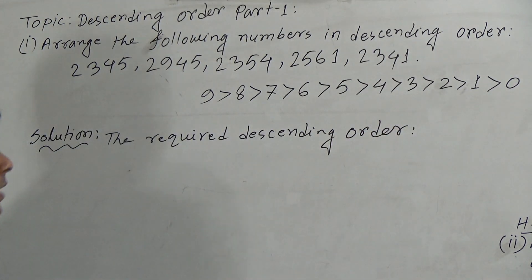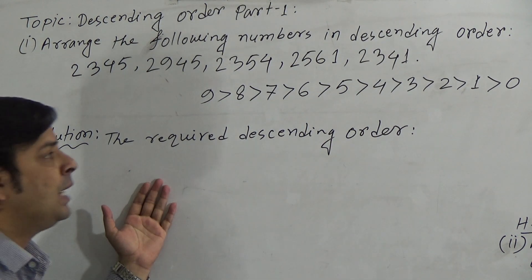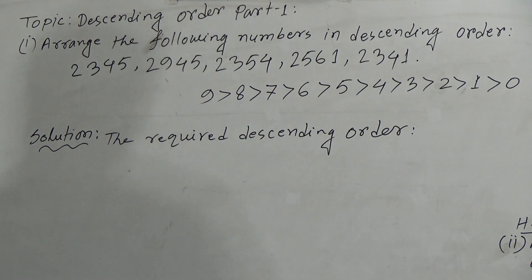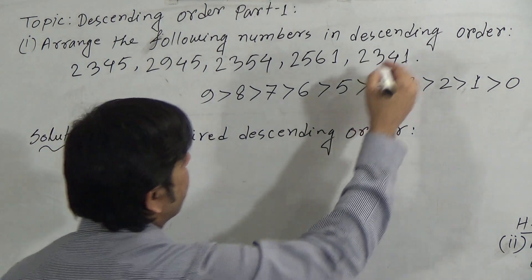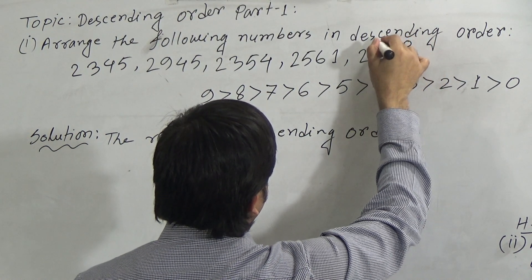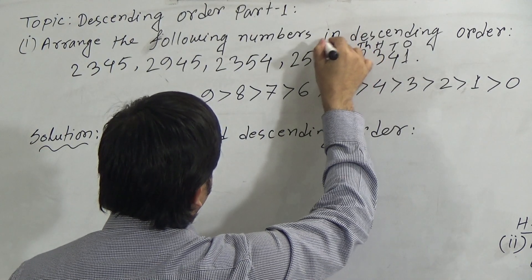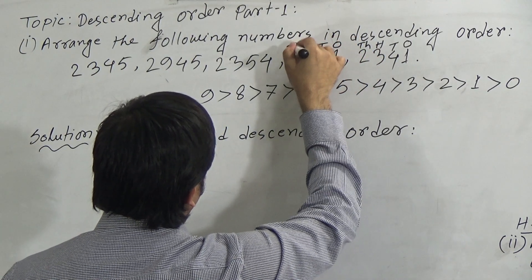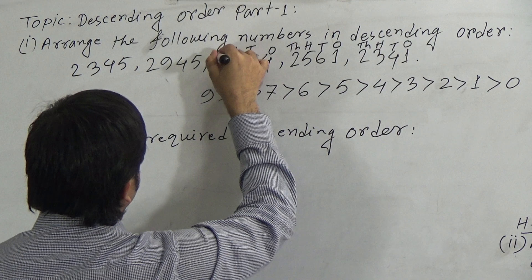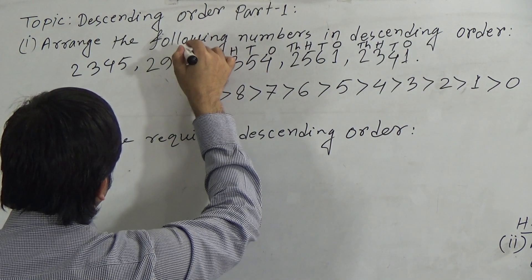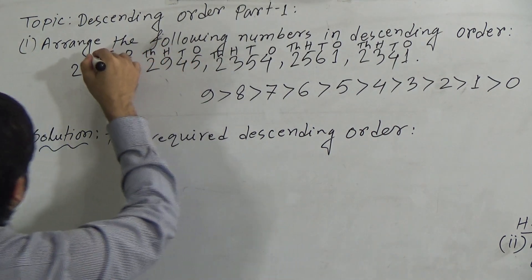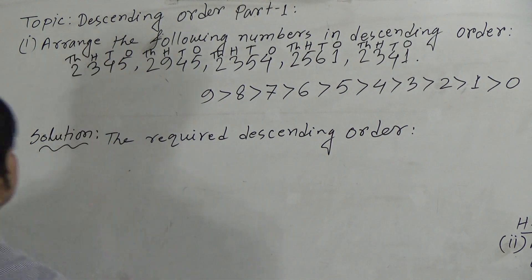To write the numbers in descending order, we first need to indicate the position of the digits of each number: ones, tens, hundreds, thousands. We mark the place values — ones, tens, hundreds, thousands — for all five numbers.